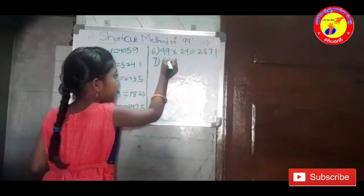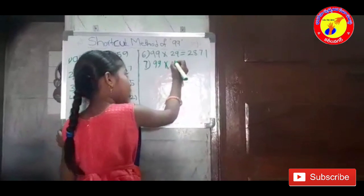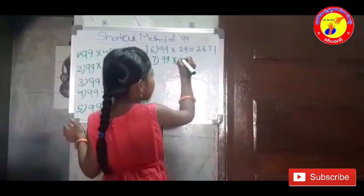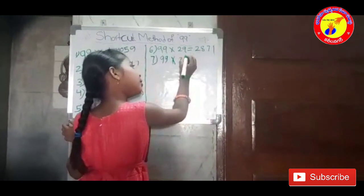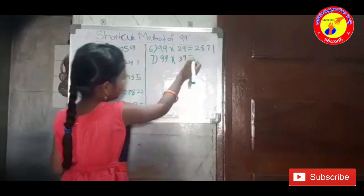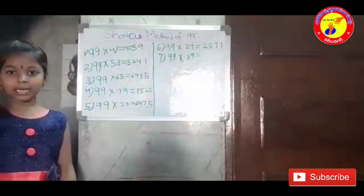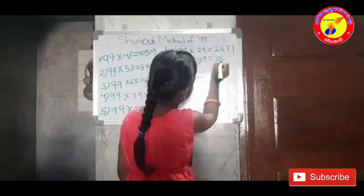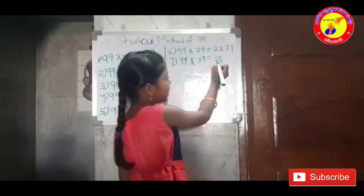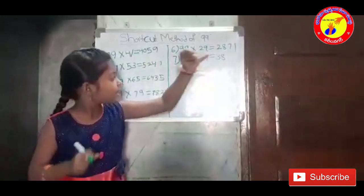99 into 39. In 39, subtract 1 — what will come? It is 38. In 3, what number means 9 will come?